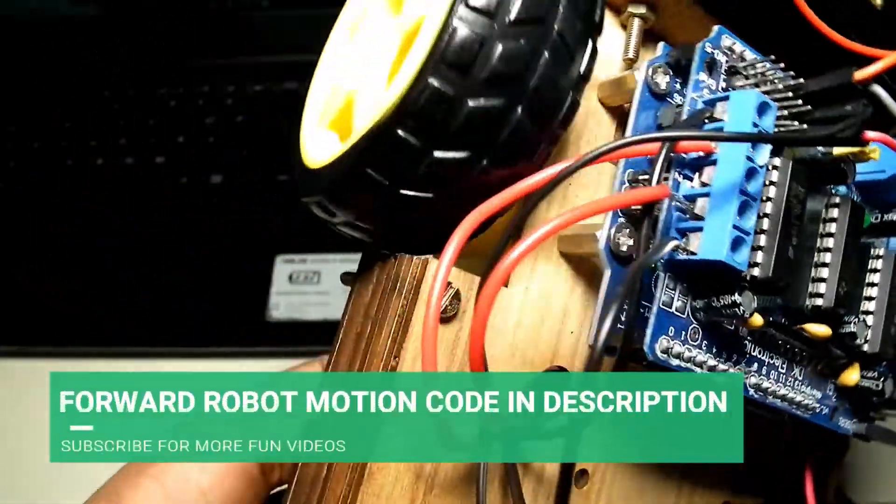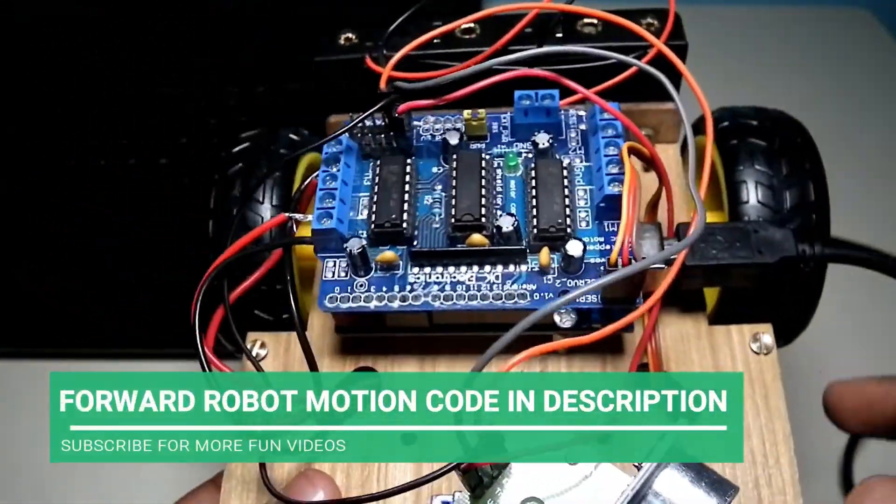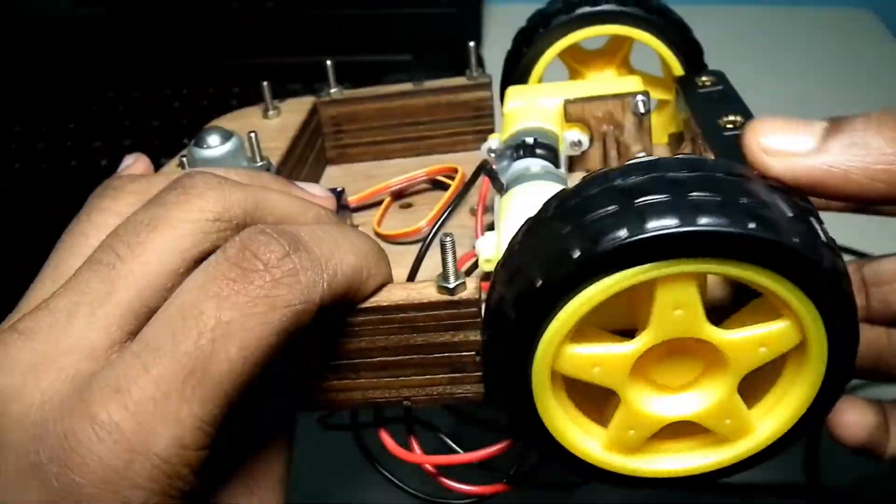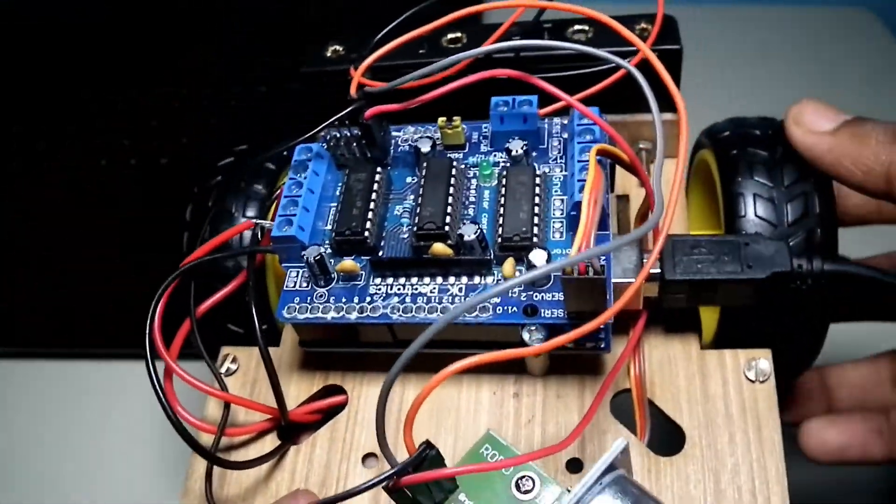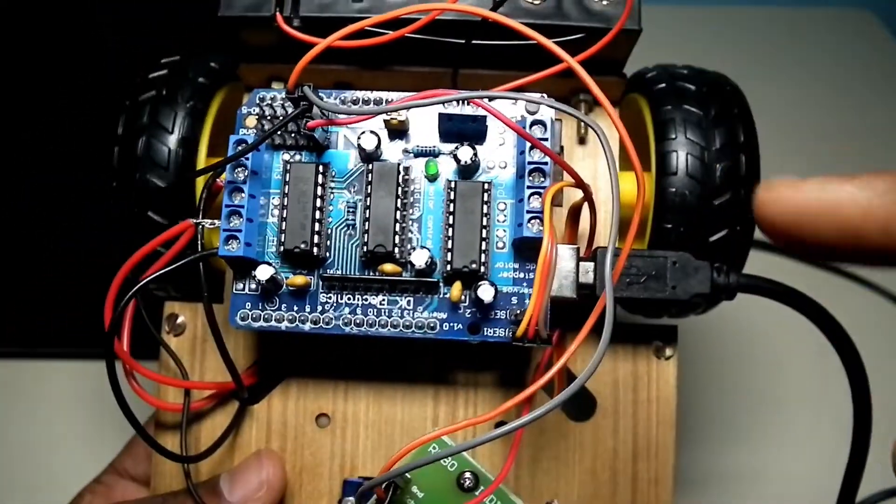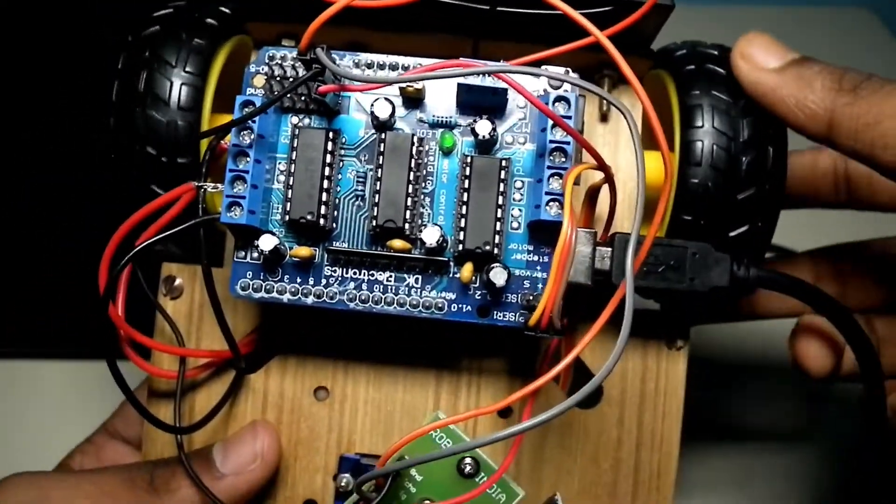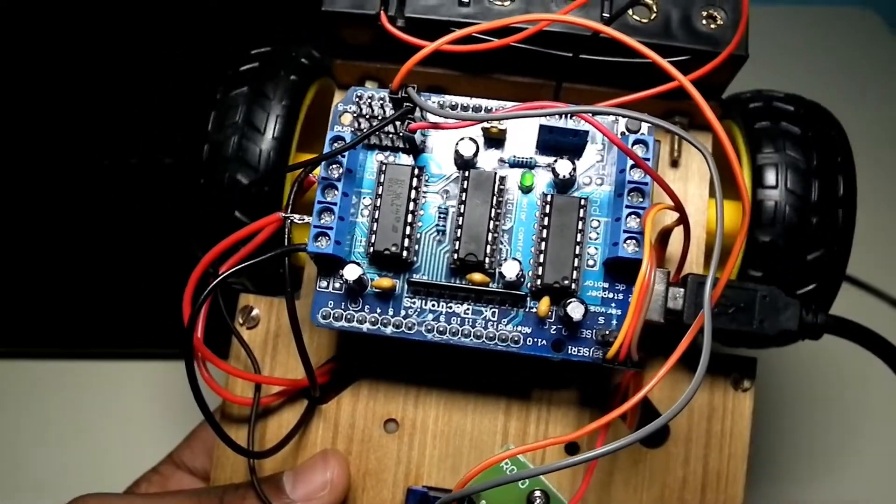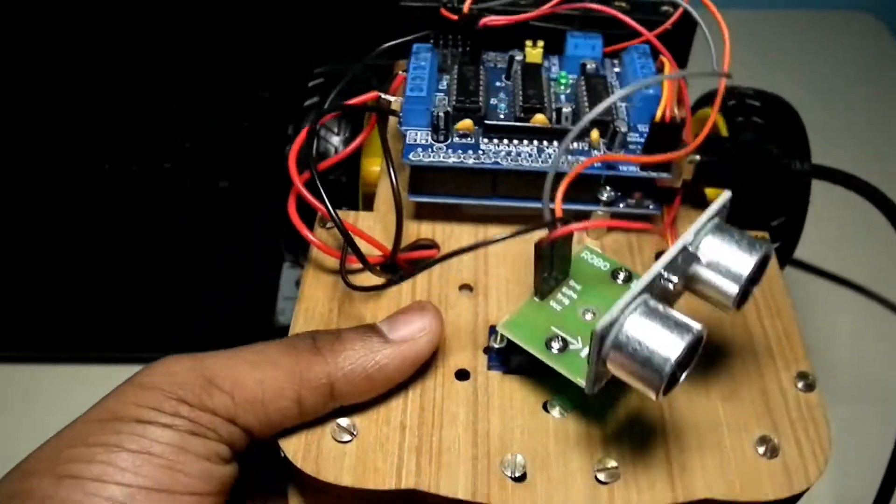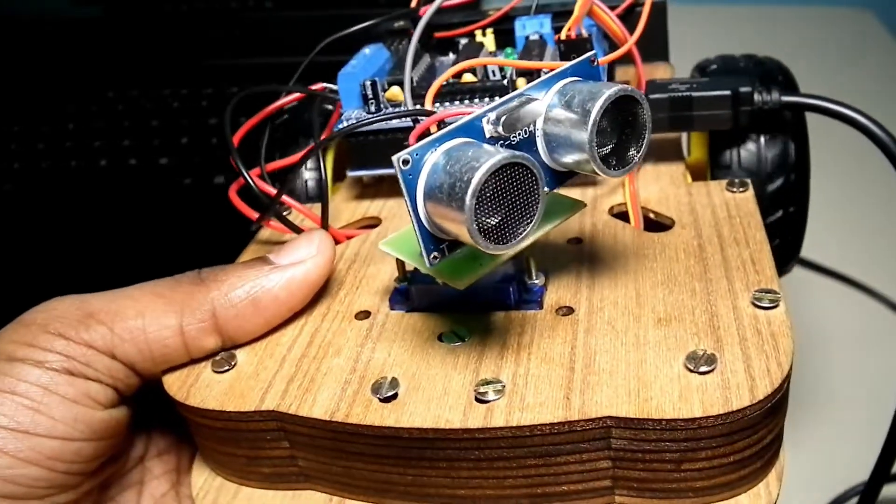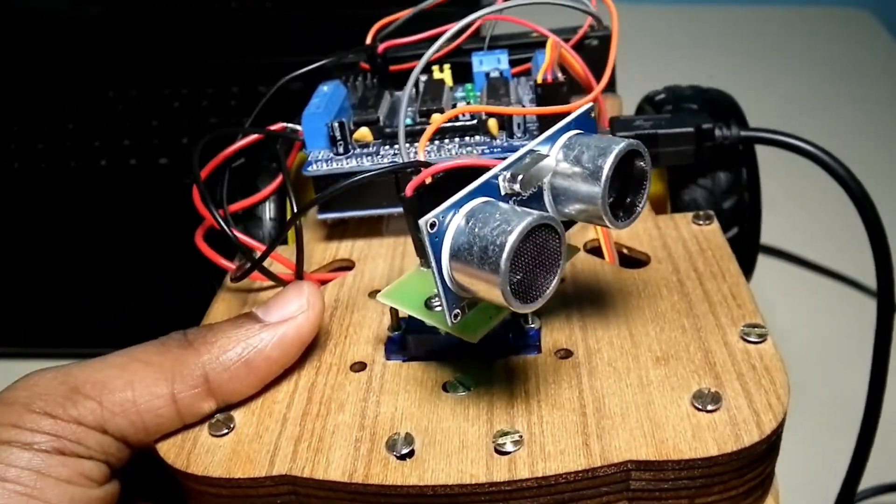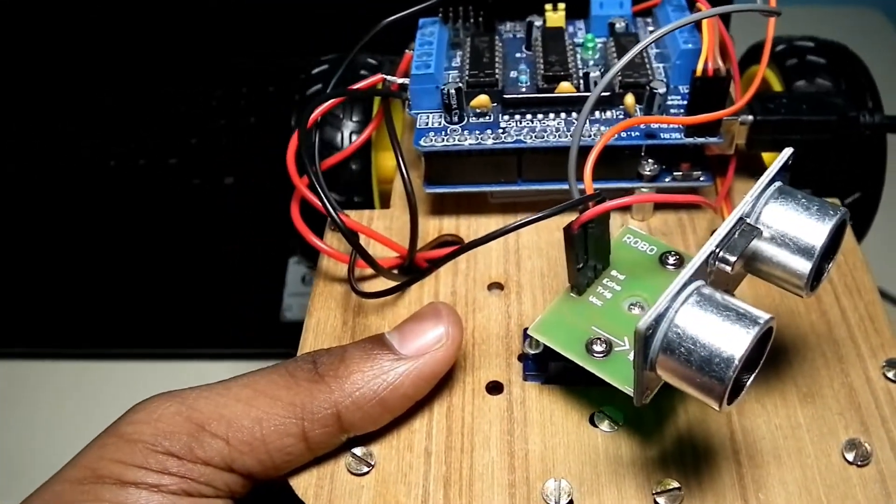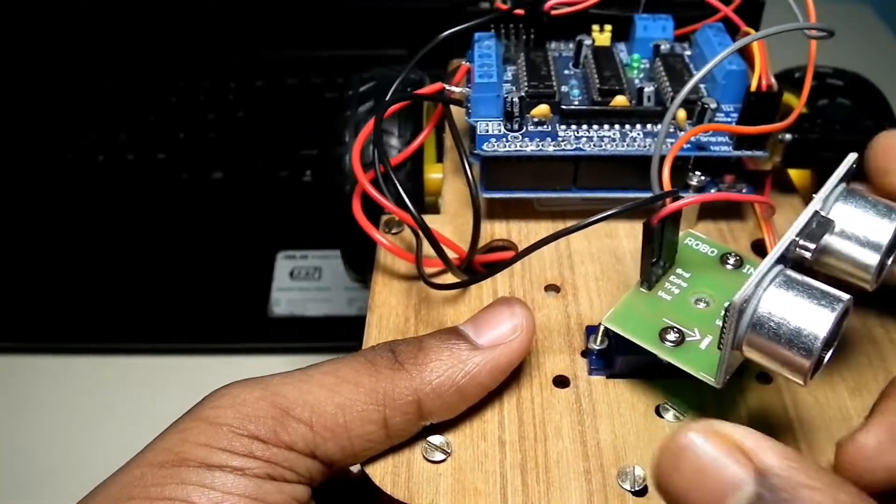So now I have uploaded the forward robot motion code. You can see that one tire is moving forward but the other is not. If you have faced this kind of problem, just give this wheel a little turn, then it will start spinning. So now the forward robot motion code is uploaded. Now what I am going to do is upload the obstacle avoiding robot code.